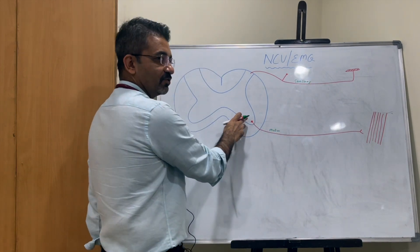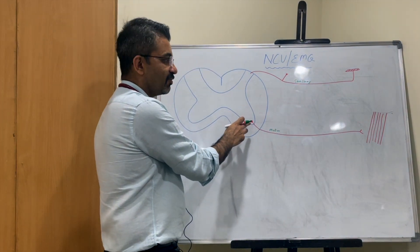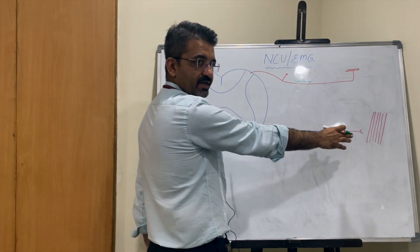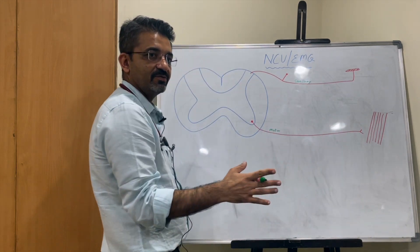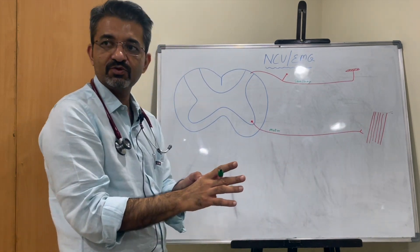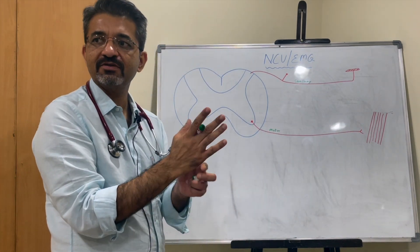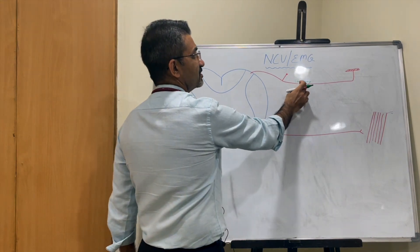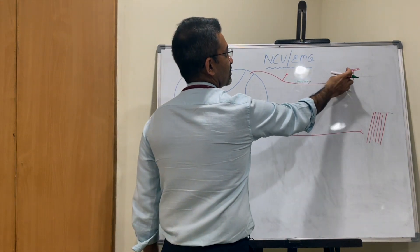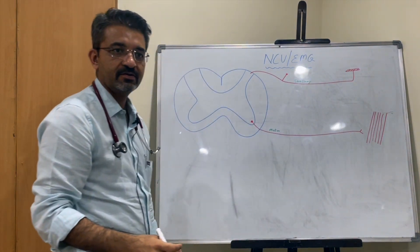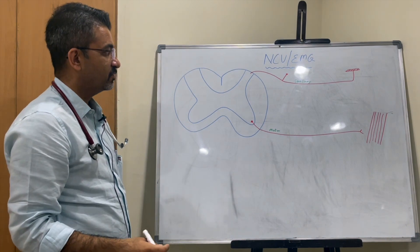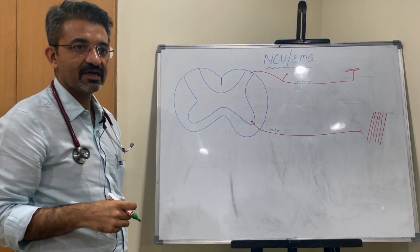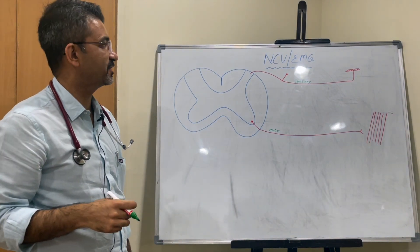The motor component goes from the anterior horn cell right to the muscles — muscles such as the first dorsal interosseous and the abductor digiti minimi — and sensations go to your skin. Now, how do we do nerve conduction studies and how do we interpret them?